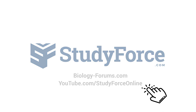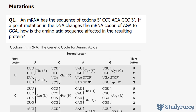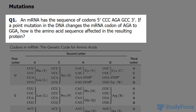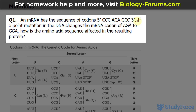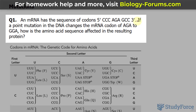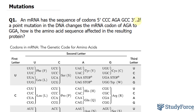In this lesson, we'll discuss how a mutation in the DNA can encode a different polypeptide after translation. The question reads: an mRNA has the sequence of codons shown underneath. If a point mutation in the DNA changes the mRNA codon of AGA to GGA, how is the amino acid sequence affected in the resulting protein?